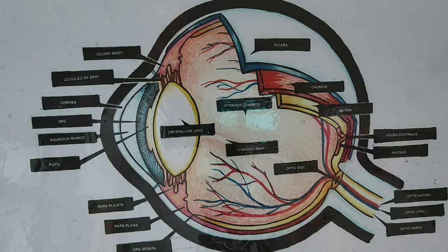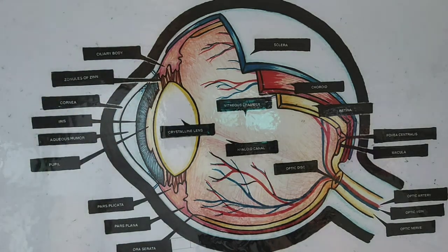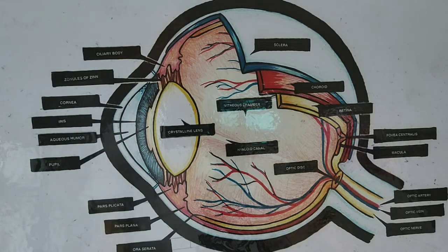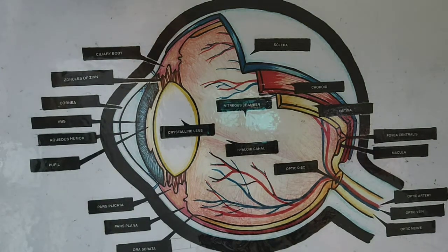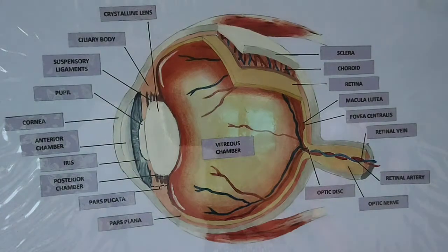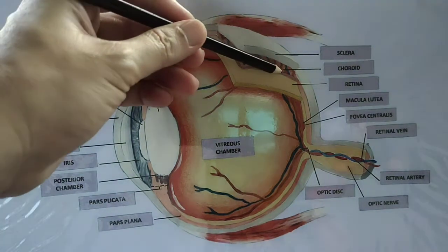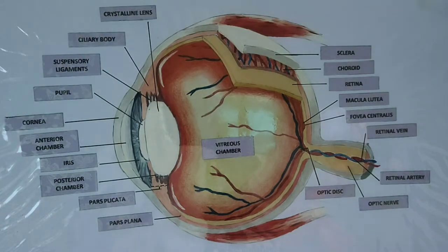Underneath it is the choroid. Now the choroid is a vascular coating of the eye. You can see in Joyce's drawing the arteries and veins. This is the layer or coating that supplies blood to the eyes.